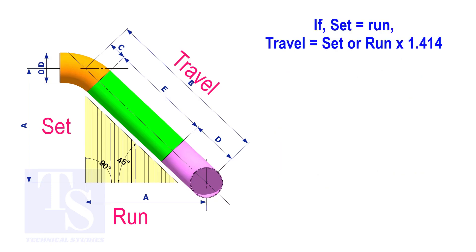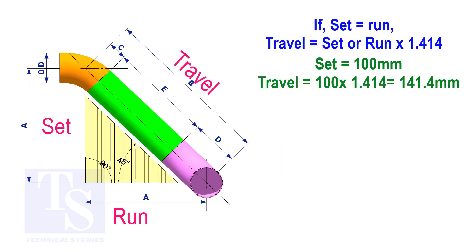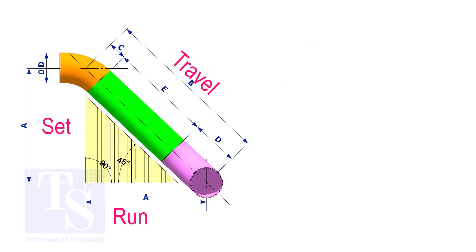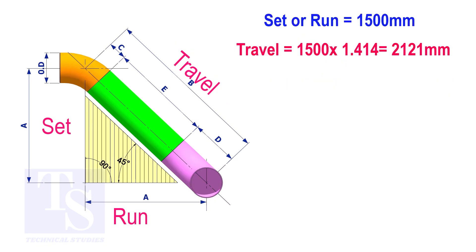Assume that the value of the set is 100. The value of the travel is 100 multiplied by 1.414 equals 141.4. Try another example: suppose the value of the set or the run is 1500 millimeters. The value of the travel will be 1500 multiplied by 1.414 equals 2121 millimeters.